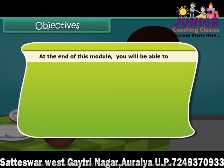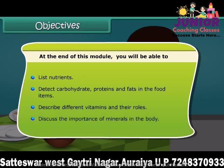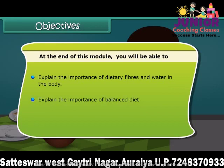Dear friends, at the end of this lesson, you will be able to list nutrients and detect carbohydrates, proteins, and fats in the food items. You will also be able to describe different vitamins with their roles and discuss the importance of minerals in the body. In addition to this, you will also be able to explain the importance of dietary fibers and water in the body, explain the importance of balanced diet, and define deficiency diseases.